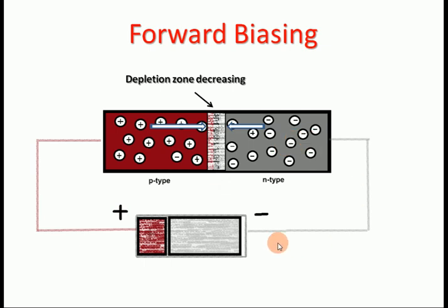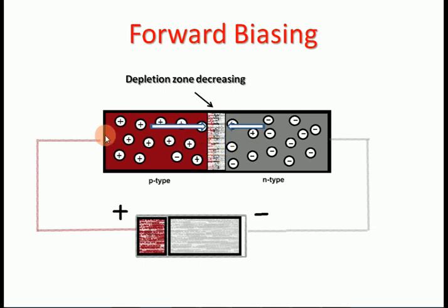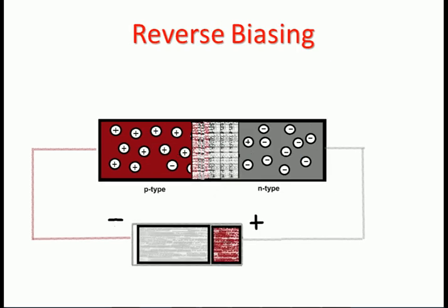The N-type will feel a negative charge, so opposite charges will repel each other, causing holes and electrons to move to the other side. By breaking the depletion region, when electrons and holes move from their higher concentration area to the lower concentration area, conduction will occur. That is why a PN junction diode conducts in forward biasing but does not conduct in reverse biasing.